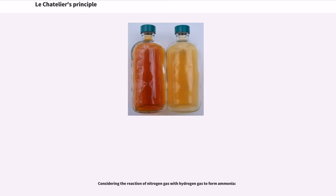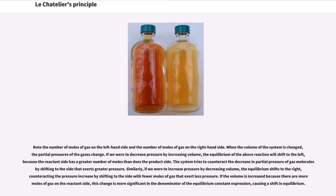Considering the reaction of nitrogen gas with hydrogen gas to form ammonia: note the number of moles of gas on the left-hand side versus the right-hand side. When the volume of the system is changed, the partial pressures of the gases change. If we decrease pressure by increasing volume, the equilibrium shifts to the left, because the reactant side has a greater number of moles than the product side. The system tries to counteract the decrease in partial pressure by shifting to the side that exerts greater pressure. Similarly, if we increase pressure by decreasing volume, the equilibrium shifts to the right, counteracting the pressure increase by shifting to the side with fewer moles of gas that exert less pressure.